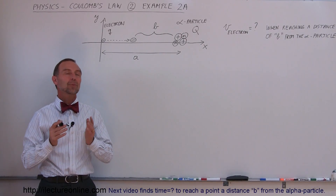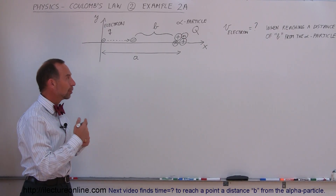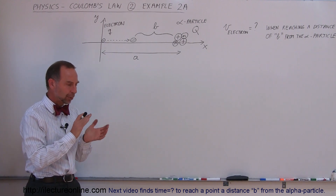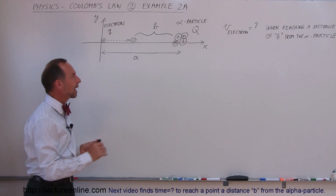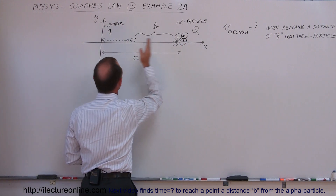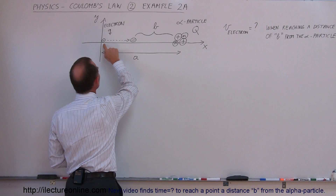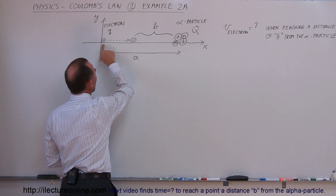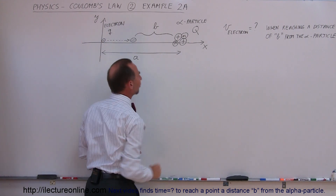Welcome to ElectronLine. We're going to do a second example of using Coulomb's Law. In this particular example, we're going to work in two parts. The first part goes as follows: we have an alpha particle situated on the x-axis a distance a away from the origin, and we place an electron at the origin and allow the electron to zip towards the alpha particle.